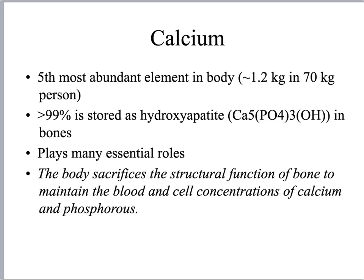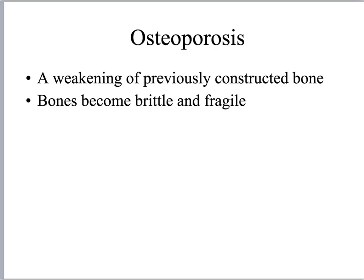The most important concept to understand about calcium is that the body will sacrifice the structural function of bone to maintain the blood and cell concentrations of calcium and phosphorus. Those signaling roles of calcium are so important that our bones can fall victim — this results in the very common metabolic bone disease osteoporosis.